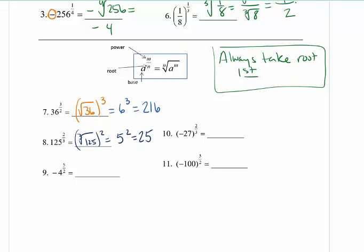I didn't have to be careful about parentheses on number 7 and 8 because there were no negatives. Starting with number 9, there are negatives, so slow down and ask yourself: is the negative included? Number 9, the negative is not in parentheses, so the negative is going to stay outside. I'm going to take the square root of 4 first, and then raise it to the fifth power. I'll keep my parentheses for number 9 — that's a good habit to get into if you have a negative there. So my answer here should be negative 32.